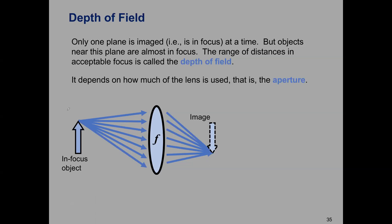All the stuff you could get in focus in a photograph is considered within the lens's depth of field. For instance, objects between a near distance and a far distance are more or less acceptably in focus — that range is the depth of field. This depends on the lens's aperture — effectively its diameter — and there's a relationship between the F-number and how large this depth of field is.